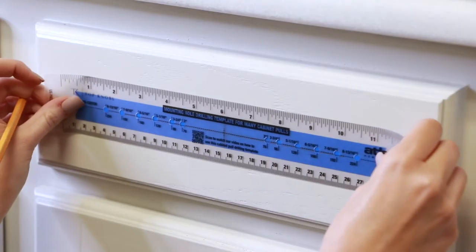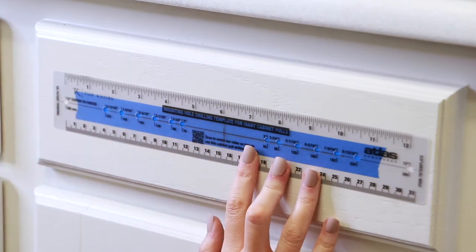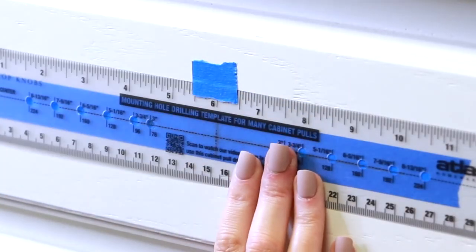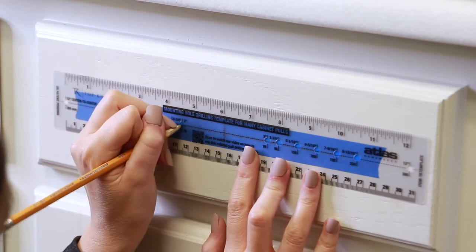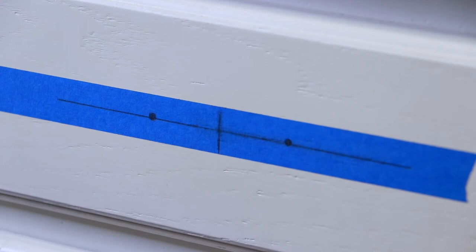Align the dotted lines on the template with the horizontal and vertical center marks on your drawer. Attach temporarily with a small piece of tape. Use a pencil or pen to mark through the holes on the template onto the tape for each hole location. Remove the template and set aside for the next drawer.